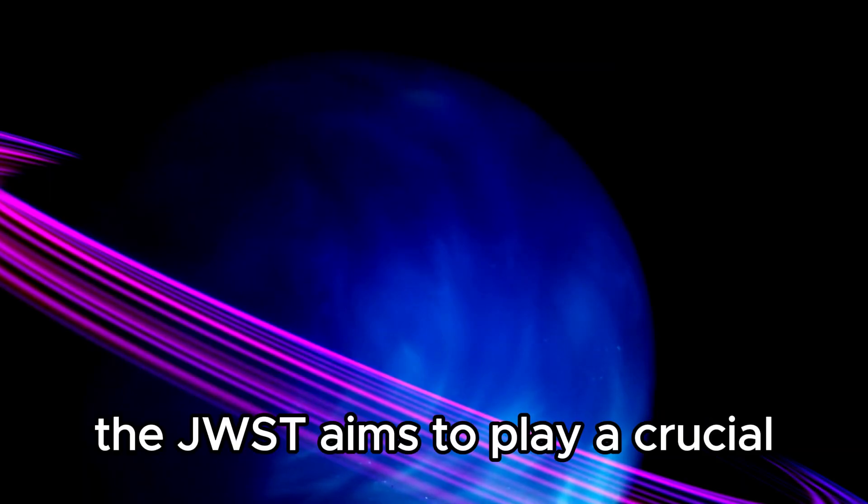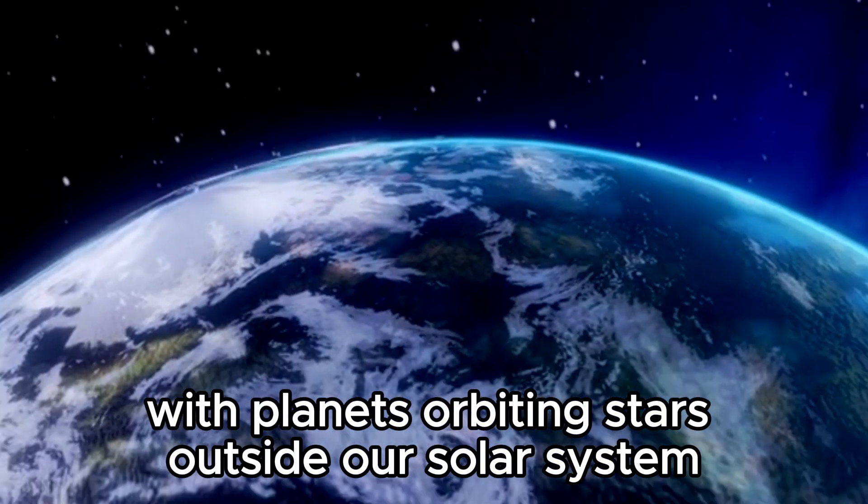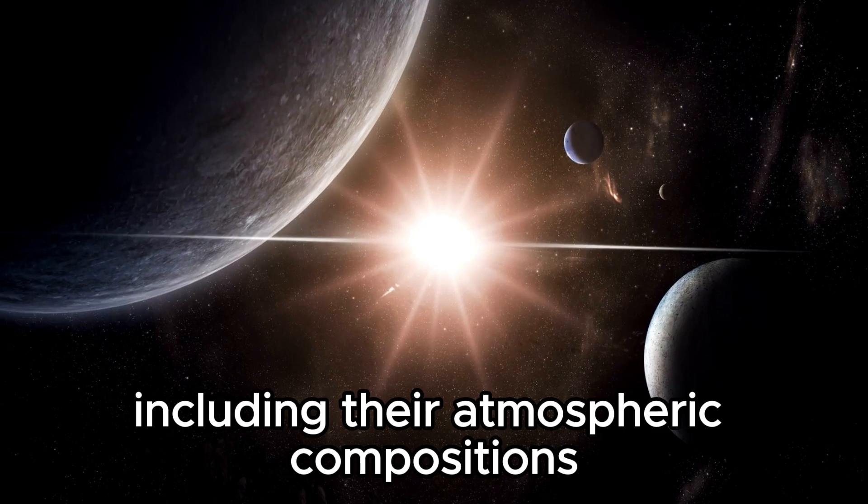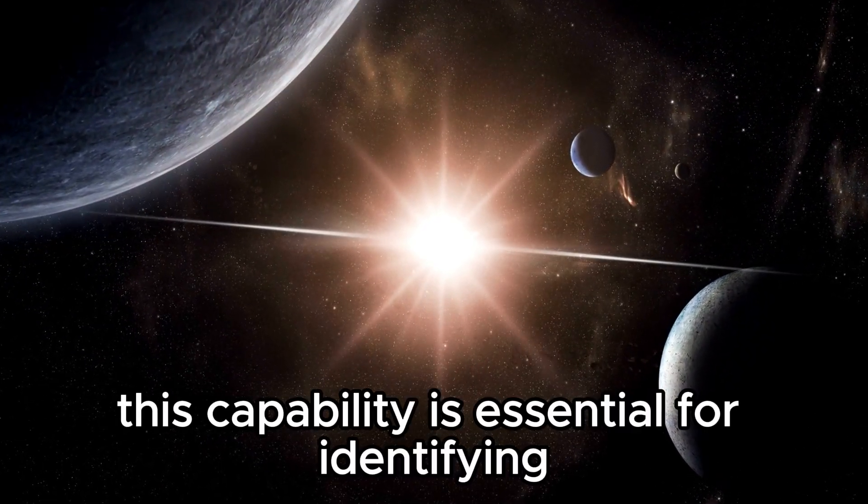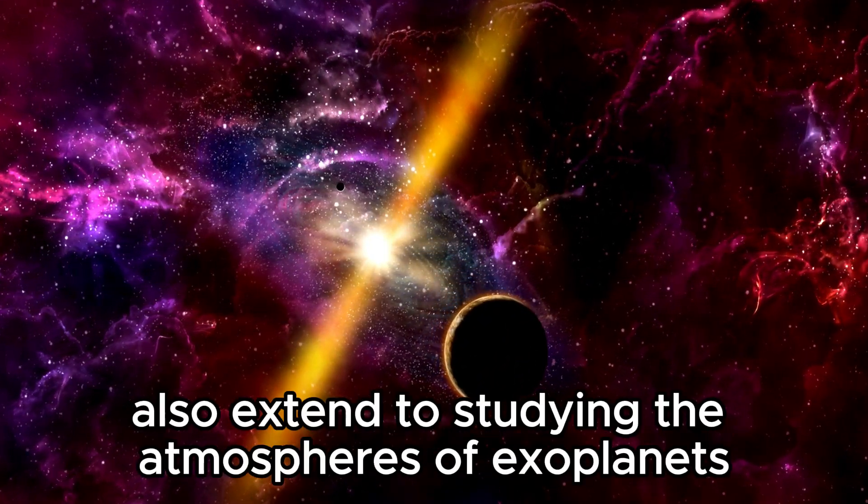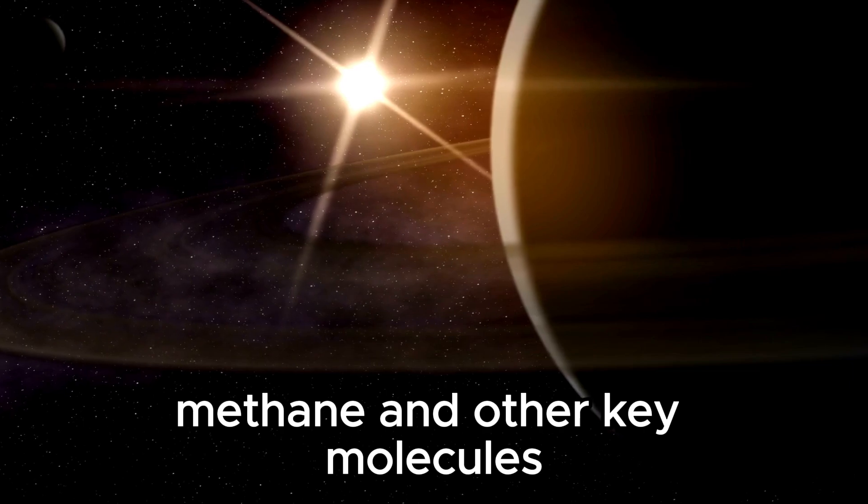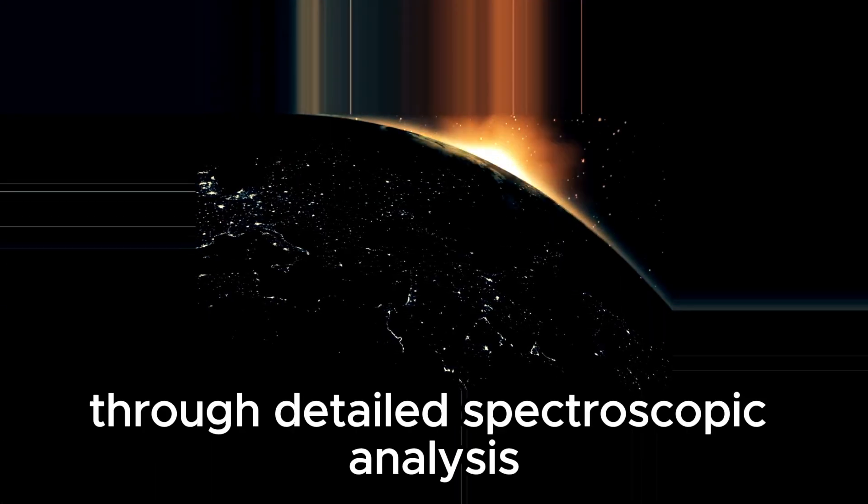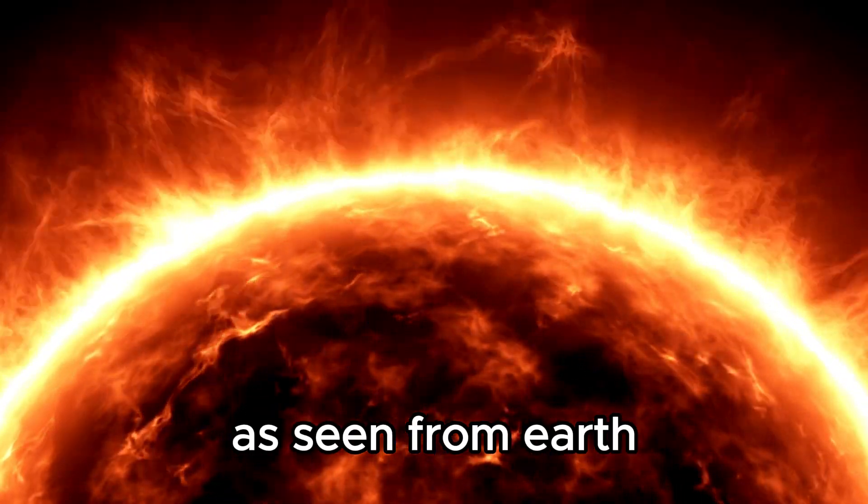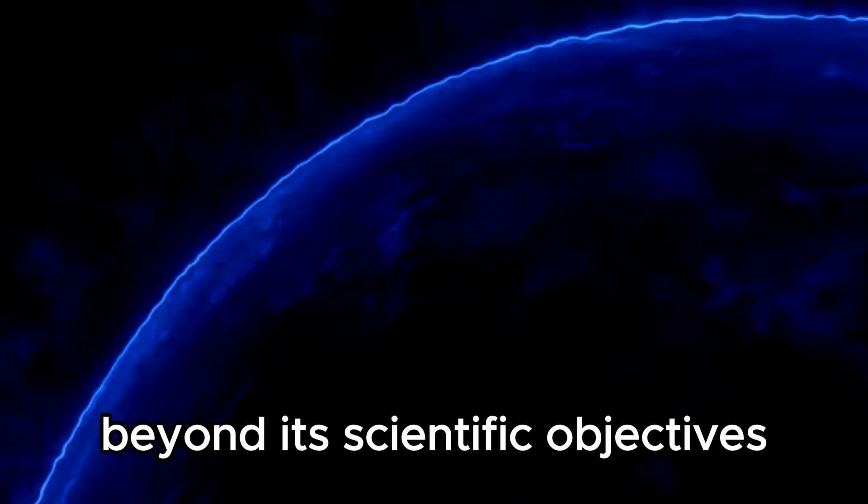Beyond stars and galaxies, the JWST aims to play a crucial role in the search for exoplanets, planets orbiting stars outside our solar system. Using its sensitive instruments, the telescope can detect subtle signals from exoplanets, including their atmospheric compositions. This capability is essential for identifying potentially habitable worlds and studying conditions that could support life beyond Earth. The JWST's observations also extend to studying the atmospheres of exoplanets, searching for signs of water vapor, methane, and other key molecules that could indicate habitability or biological activity. Through detailed spectroscopic analyses during planetary transits, when an exoplanet passes in front of its host star as seen from Earth, astronomers can decipher the chemical makeup of these distant worlds with unprecedented precision.